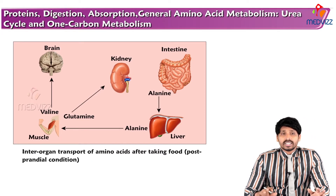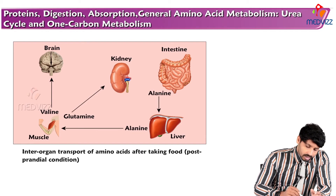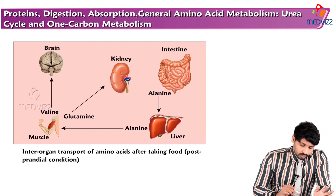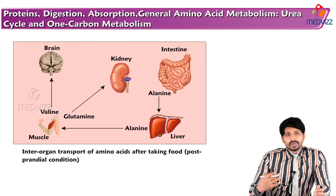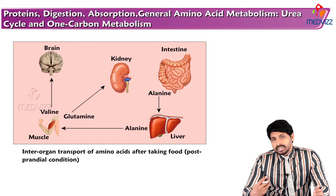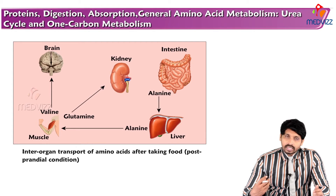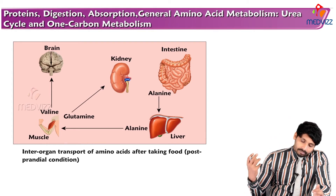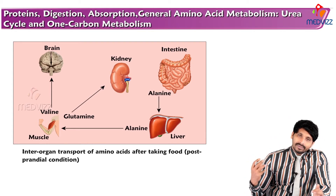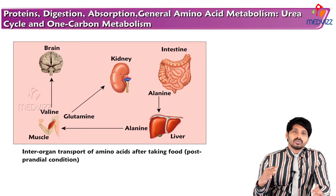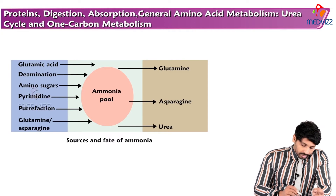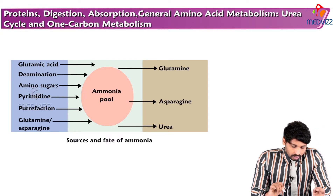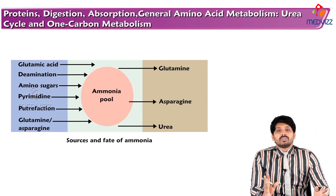In the fed state, valine goes to the brain and glutamine goes to the kidney. Alanine coming from the intestine after digestion and absorption is sent by the liver toward muscle to make up proteins.